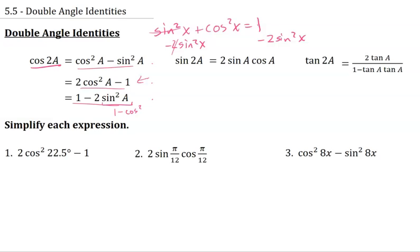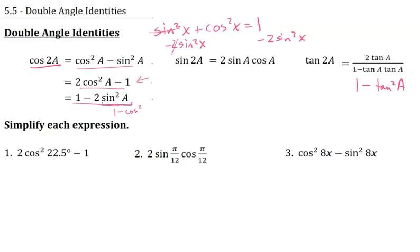If you're going the other direction, just make sure you recognize the forms so that we can figure out what a is and double it to plug an angle in. For sine of 2a, that's equal to 2 times sine a times cosine a. And tangent of 2a is 2 tangent a over 1 minus tangent squared a.